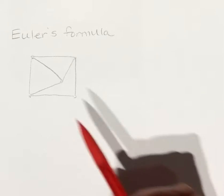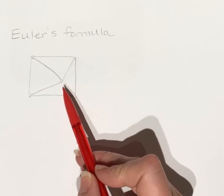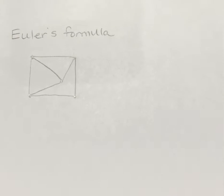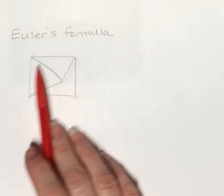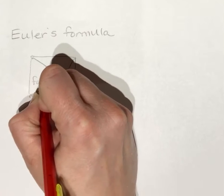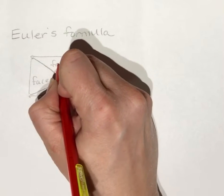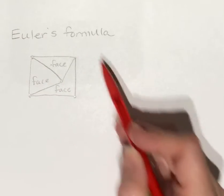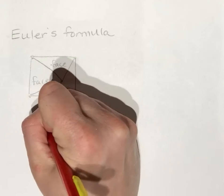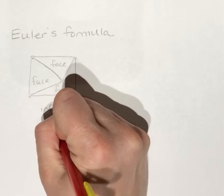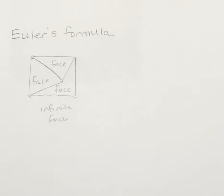We have faces. If you have a planar graph drawn in such a way that the edges do not intersect—because we know we can have a planar graph where edges intersect, but we have to redraw it—so if it's drawn so none of the edges intersect, these are called faces. This is a face, this is a face, and this is a face. The outside is called an infinite face, and that's the region outside of the graph.